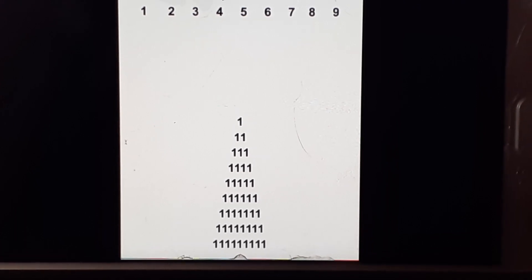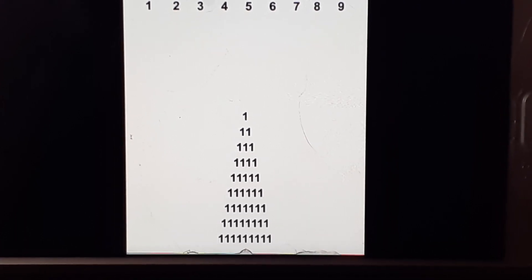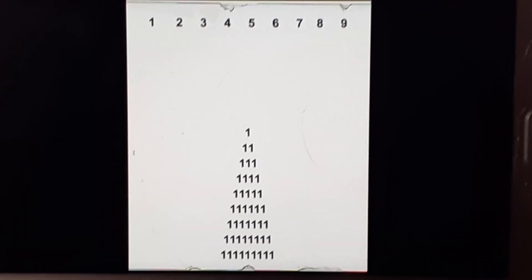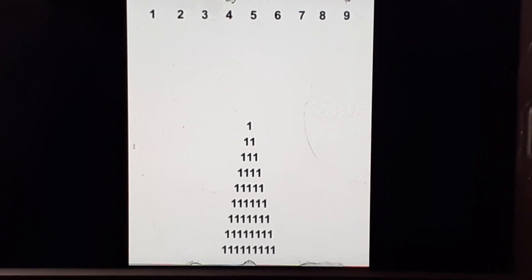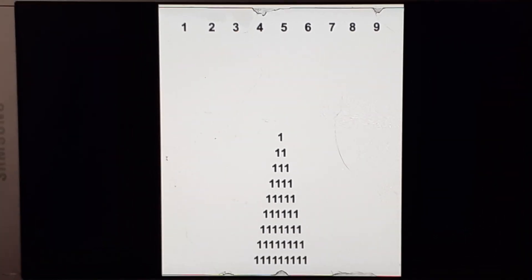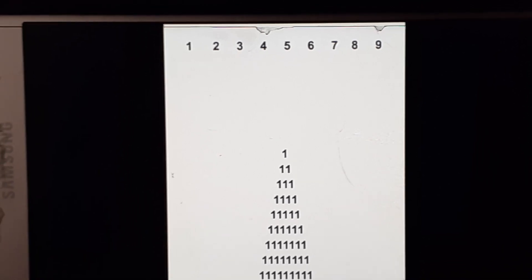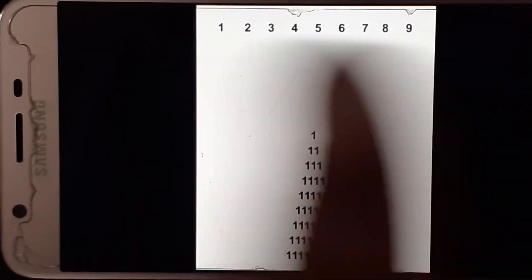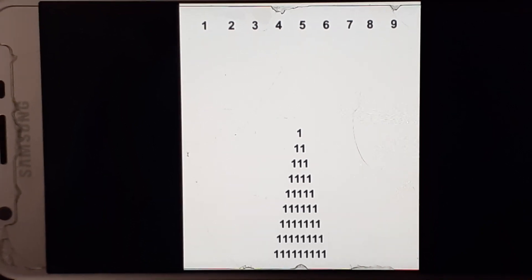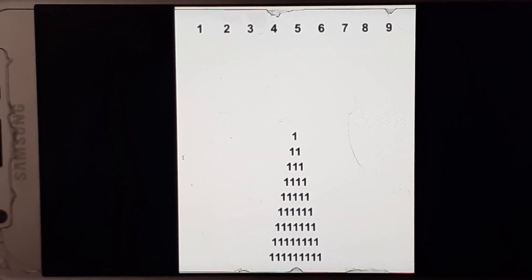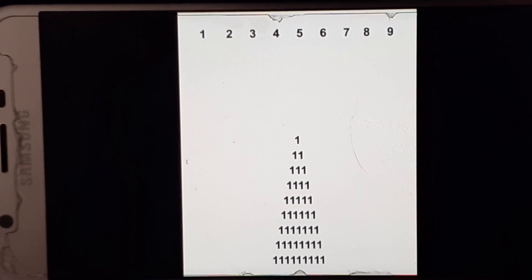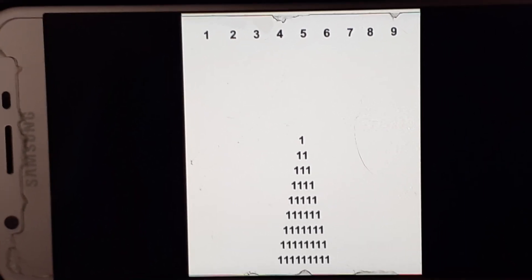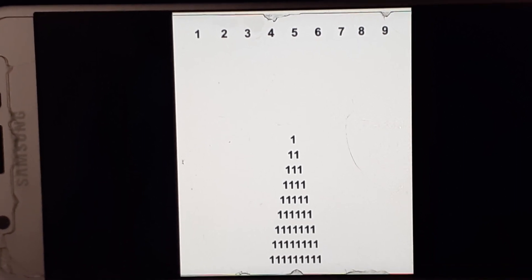This video right here is going to show you the secret formula or code to manifesting your reality. You see the numbers at the top, one through nine, the regular numbers. That right there is the code that we've been given. We are told like 10, 11, 12, 13, numbers are infinite, they go on and on and on. But that's not factual.